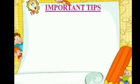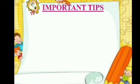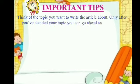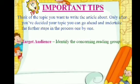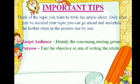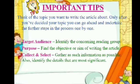Some important tips while writing an article. Think of the topic you want to write the article about. Only after you have decided your topic can you go ahead and undertake the further steps in the process one by one. First, target audience: identify the concerning reading group. Purpose: find the objective or aim of writing the article. Collect and select: gather as much information as possible and identify the details that are most significant.